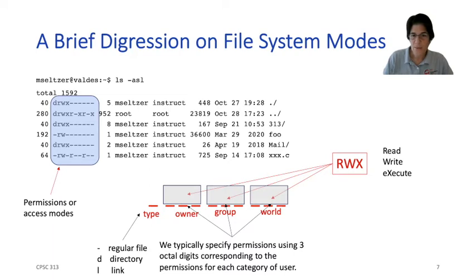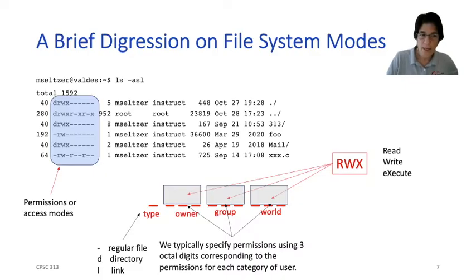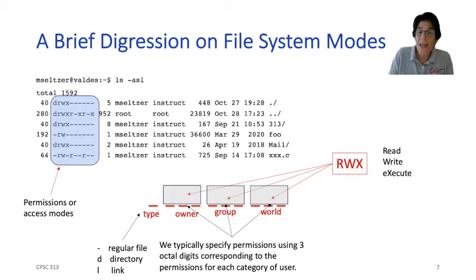So if we look here, dot is my home directory. The d bit is set, indicating it's a directory. The permissions show that I, as the owner, can read, write, and execute, but nobody else — even in my group or the rest of the world — can do anything with it. And that's how we lock down our directories to make sure that nobody can snoop in our data.